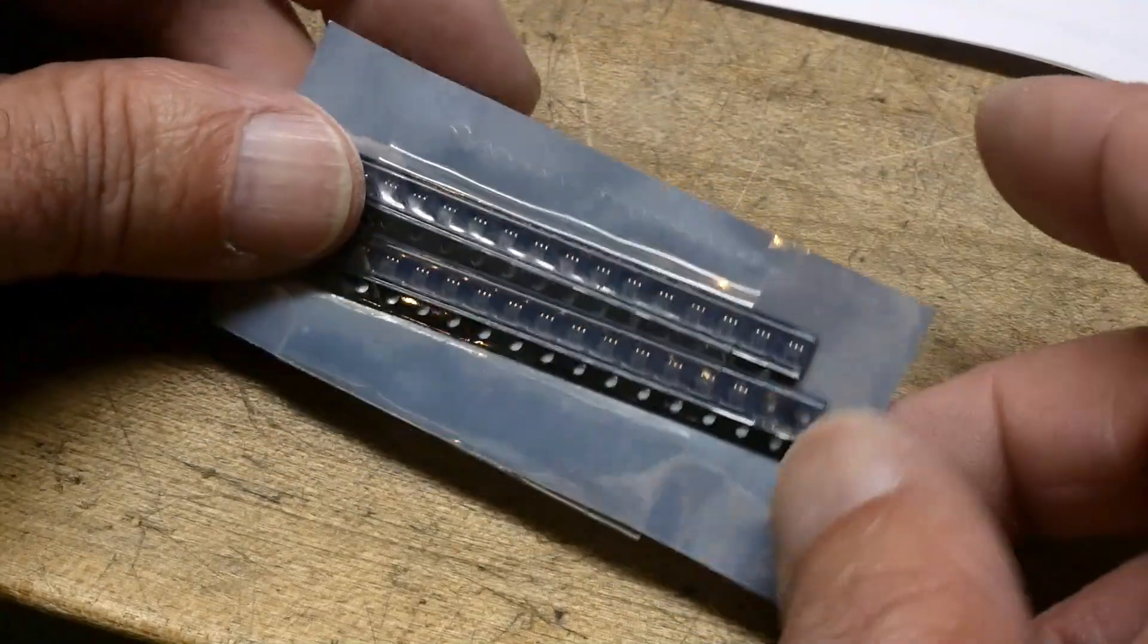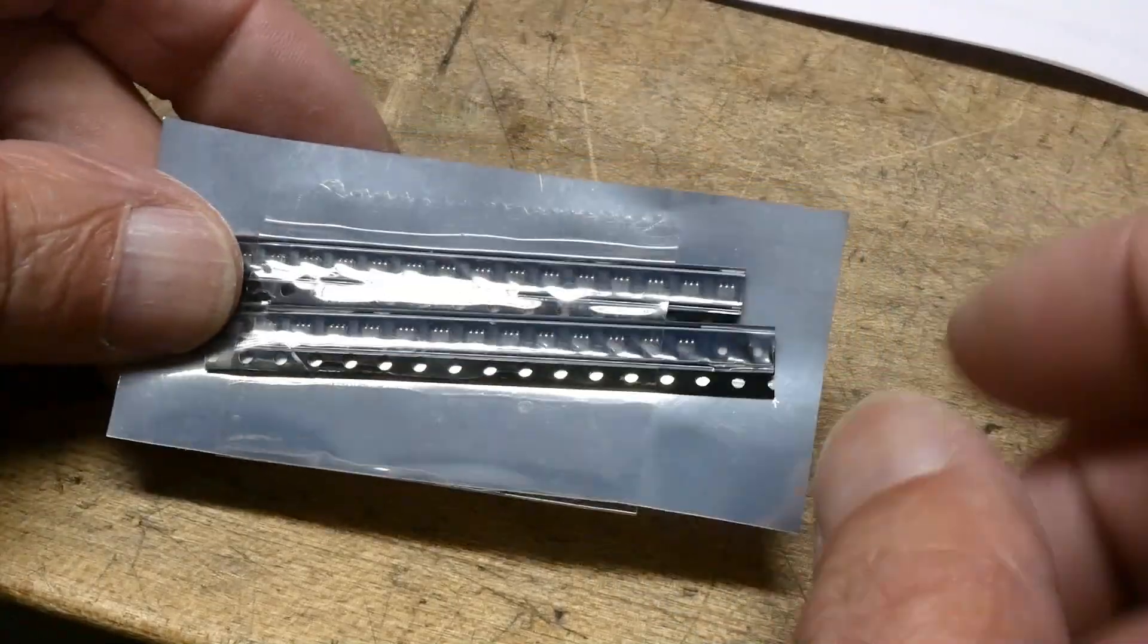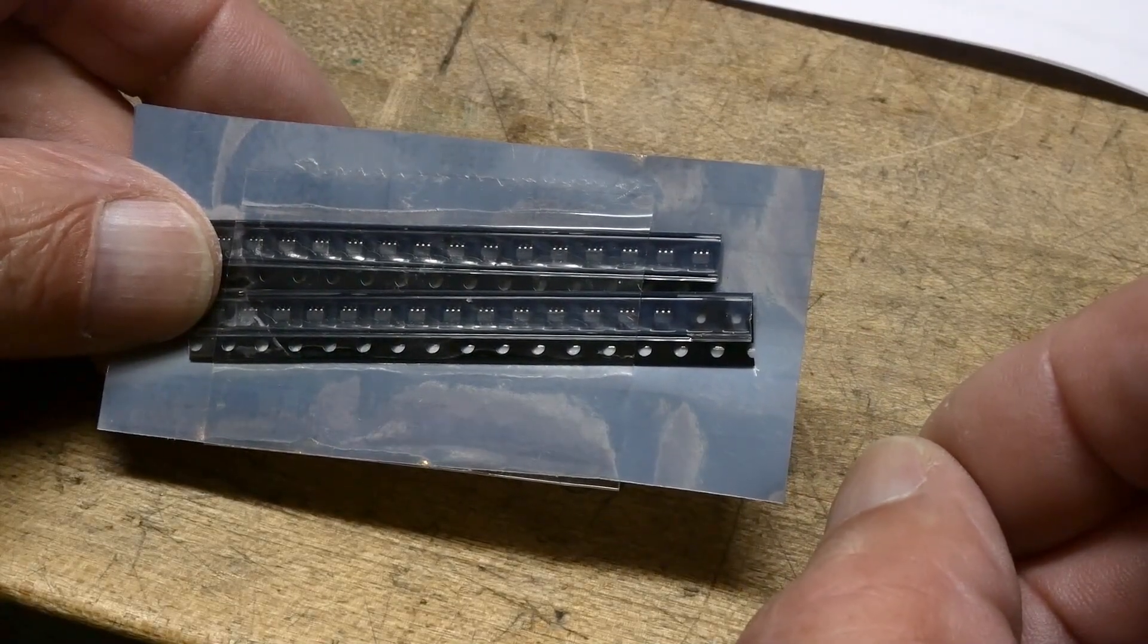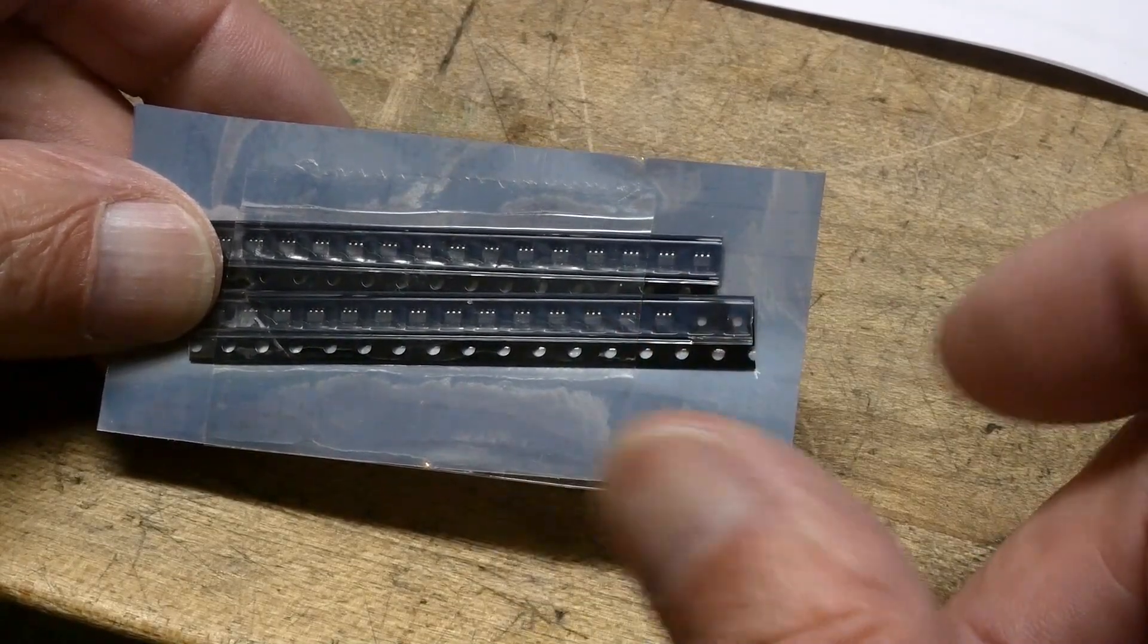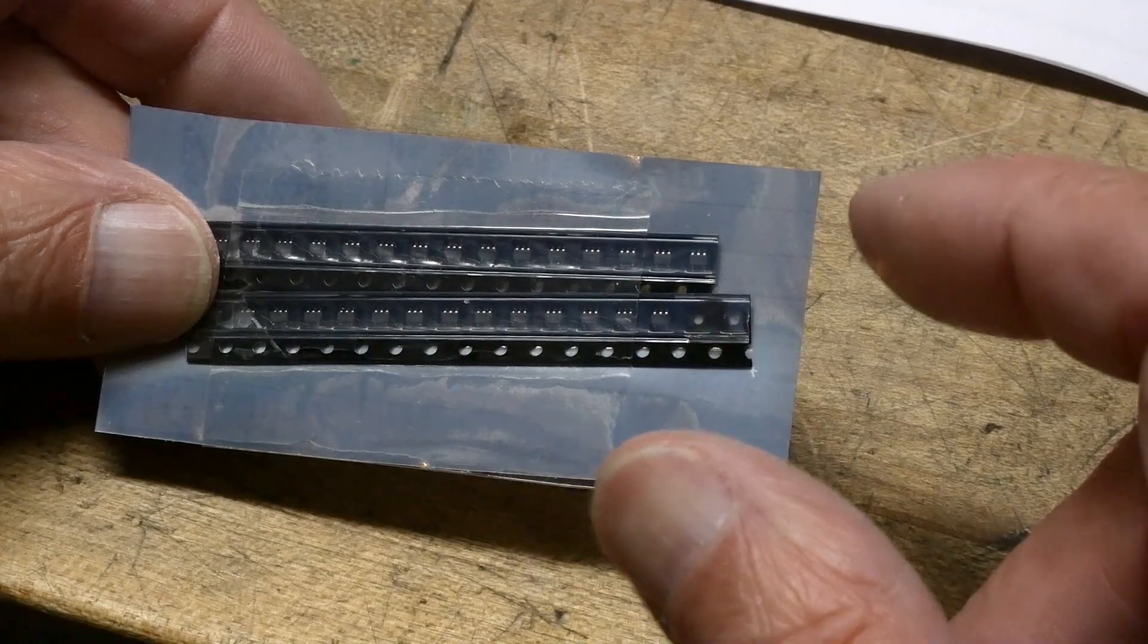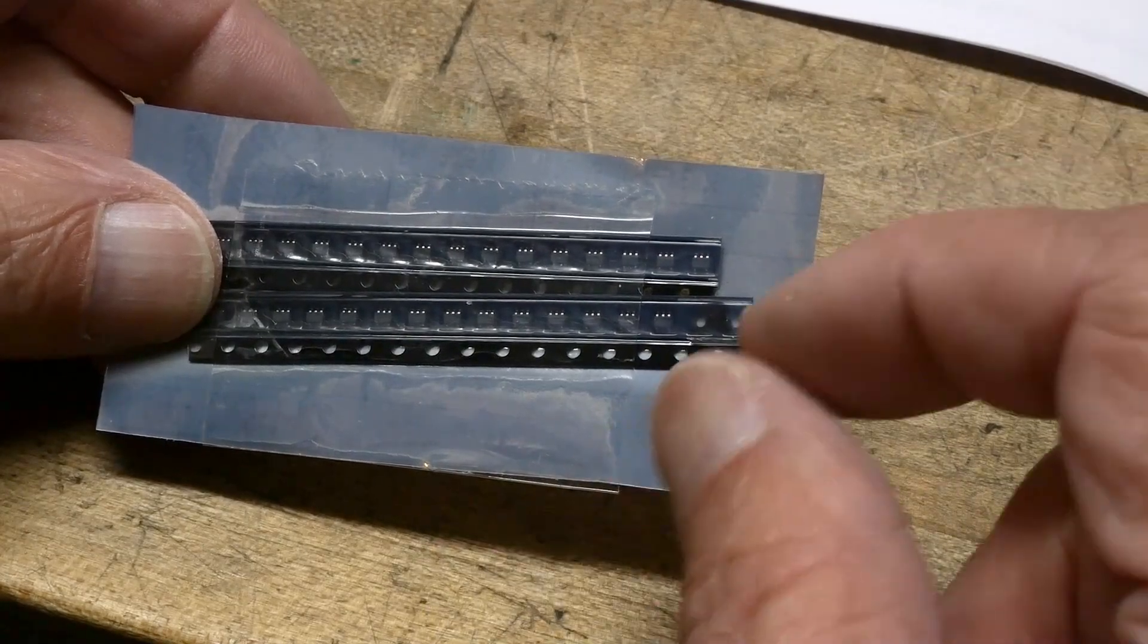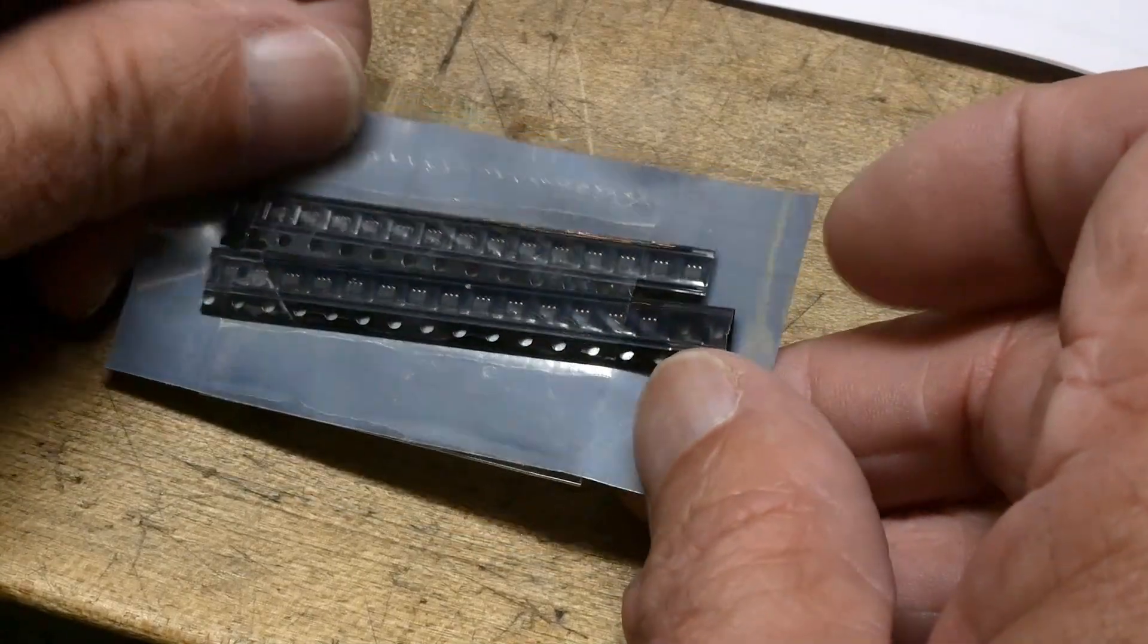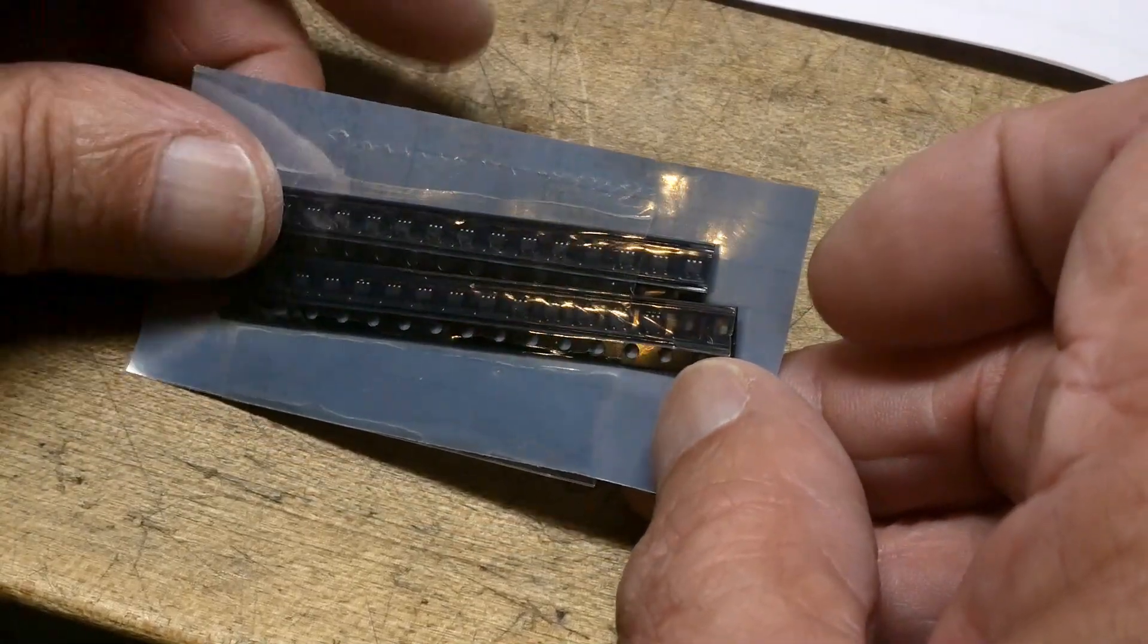These are SC-70 packages. I think SC-70 is the right one. It's like an S06, but it's smaller. Anyway, it's super teeny tiny and very difficult to hand solder and stuff.